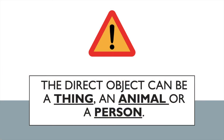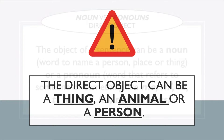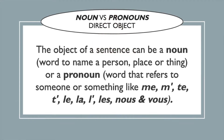The direct object is a thing, an animal, a person, or a place as well. The pronoun is the little word that stands for a noun, and it refers to the thing or something that comes before.